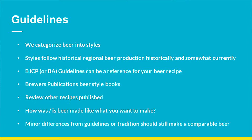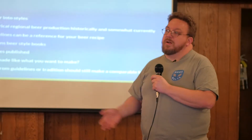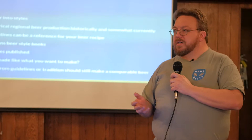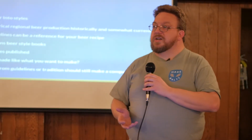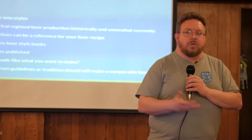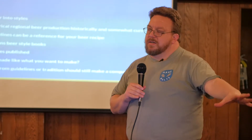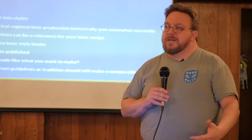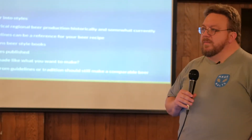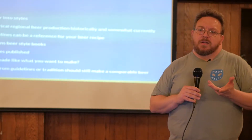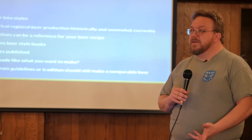The BJCP guidelines are a way to put apples to apples together when judging beers in competition, but they're also a good reference for what to put into a recipe for a certain style. A lot of those styles are also in the BA guidelines, which is what professionals get judged against at GABF, and the World Beer Cup uses different guidelines every couple of years. These guidelines are a good reference when thinking about what to put in a recipe.